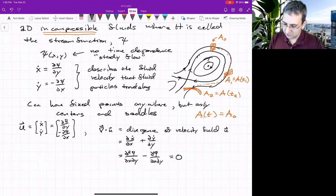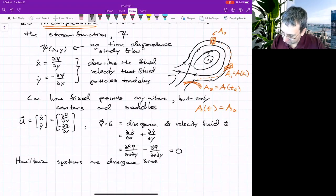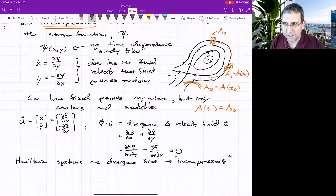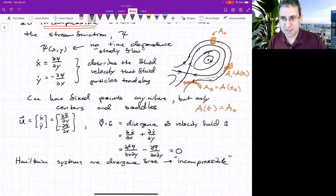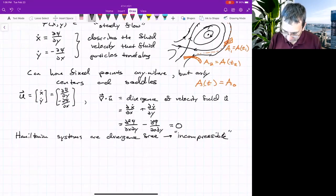So Hamiltonian systems naturally are divergence free. And it's that divergence free that means that viewed as a fluid, it's incompressible, but this same property applies even if we're not technically dealing with a fluid. You could just mathematically think of it as a fluid. So if you have something that's divergence free,